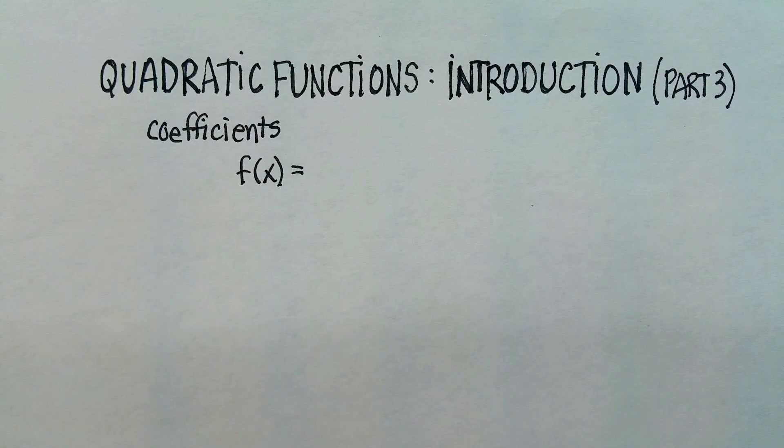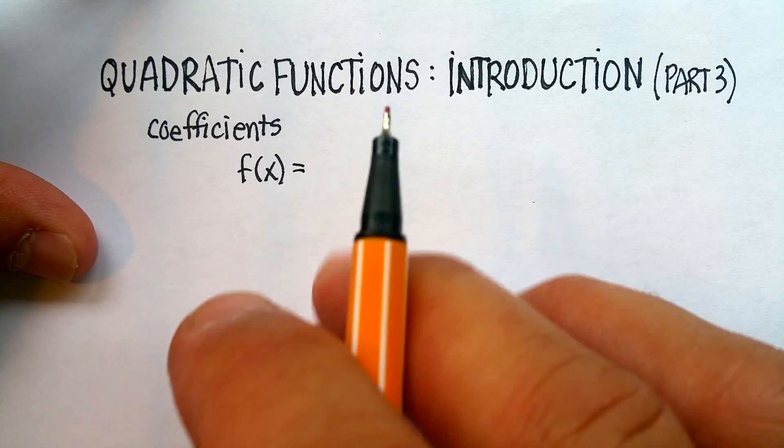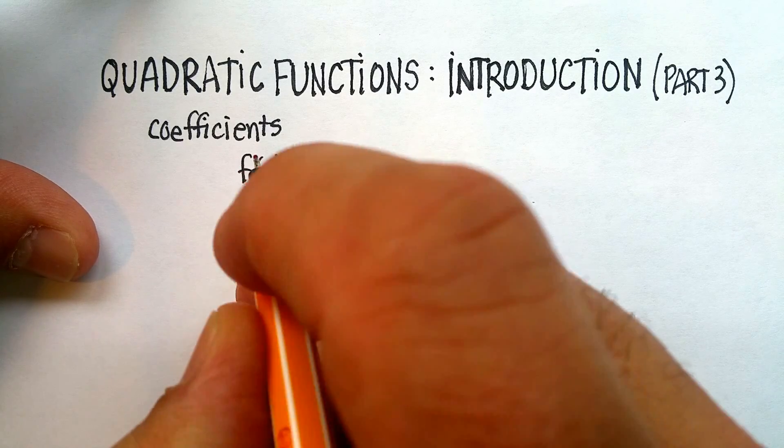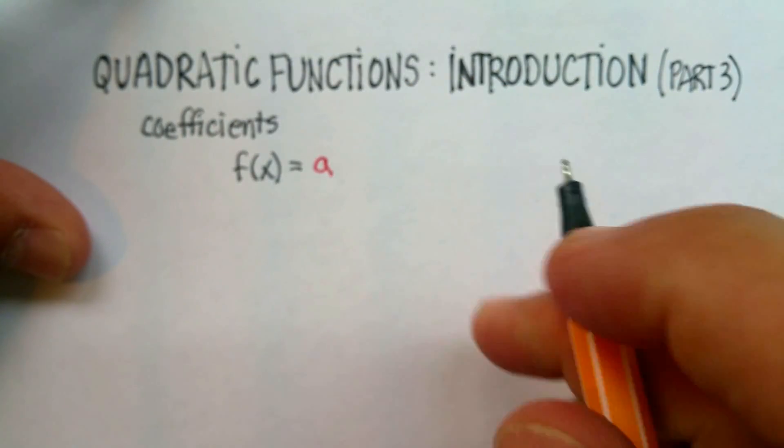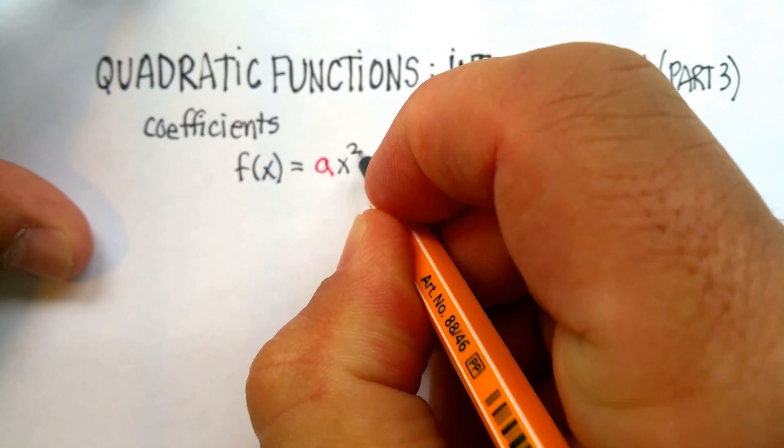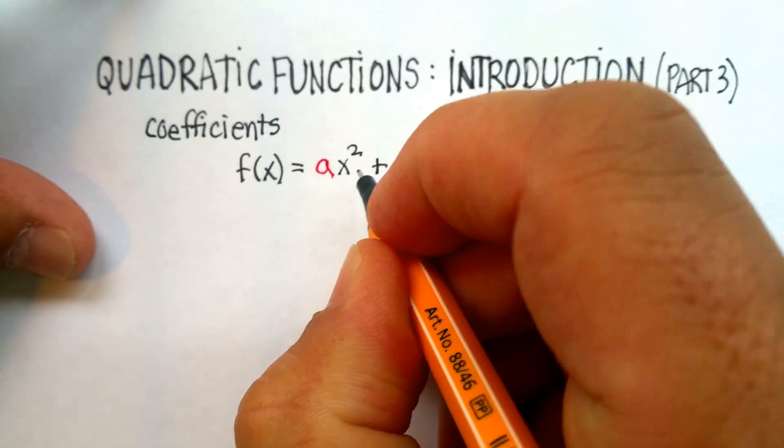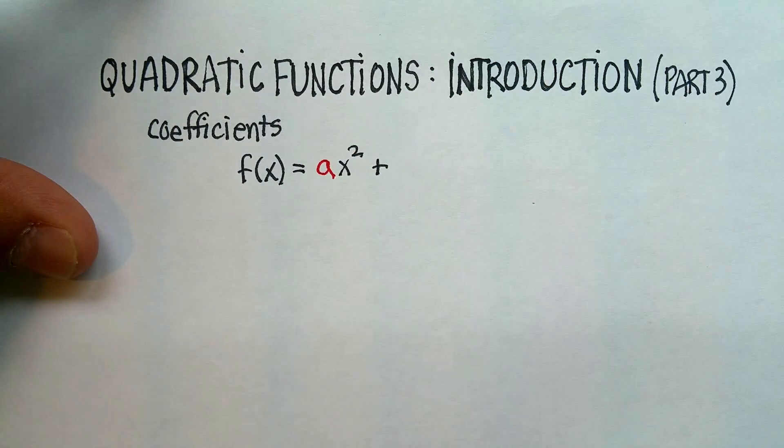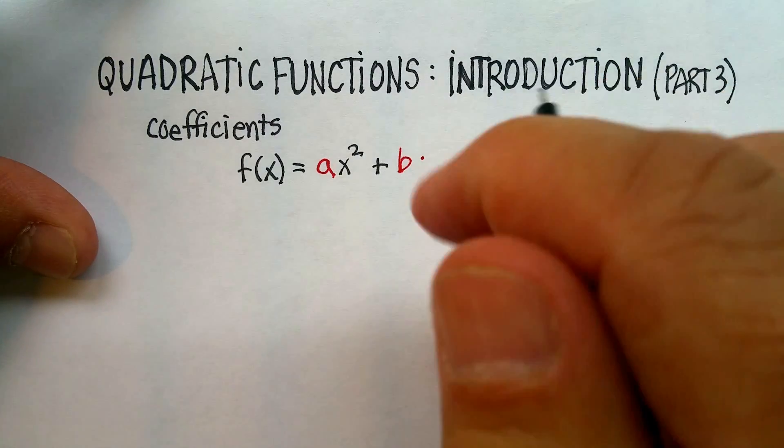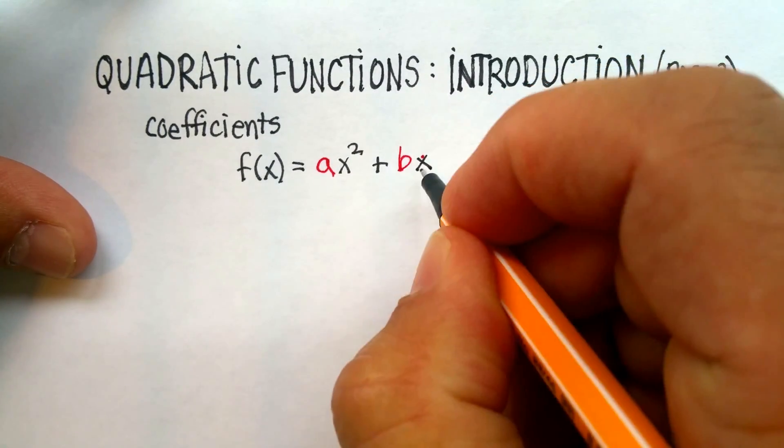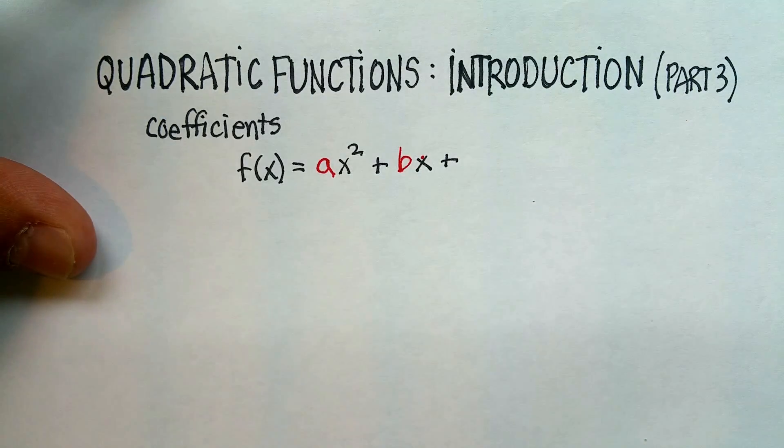So remember, I told you that the form, the standard form, for a quadratic function is f(x), which means the same thing as y, is equal to a times x squared—we said that was the quadratic term—plus bx, and we call this the linear term, plus the c.